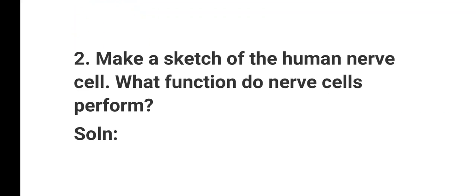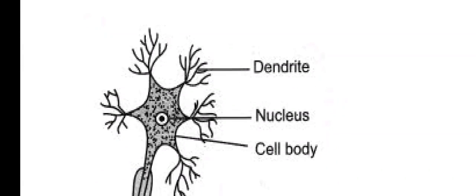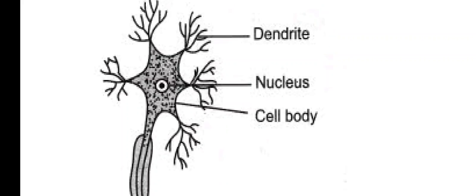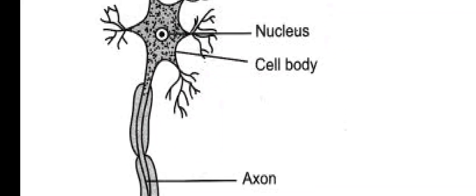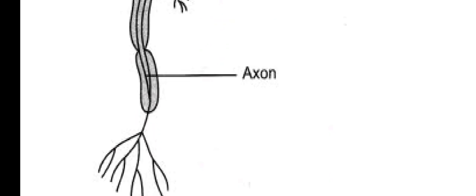Question number 2: Make a sketch of the human nerve cell. What function do nerve cells perform? Here we have to draw a sketch of the human nerve cell. The diagram labels include: cell body, nucleus, dendrite, and axon.